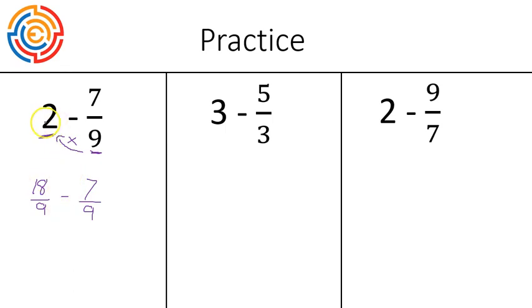Our whole number. So these are equivalent. Two is equivalent to 18 out of nine. Now 18 minus seven gives us 11 out of nine. And if we are simplifying this, we would use some quick long division.